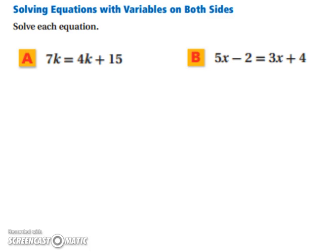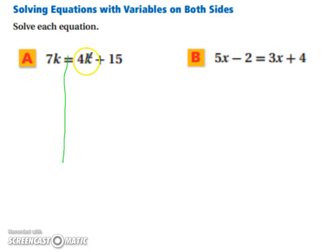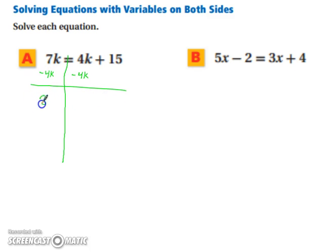You may want to get the variables to one side of the equation, so that way you're only trying to solve for one variable. We're going to start with our line so that way we know which side is our left and our right, and we want to move our variable to the other side. However, this 4 is firmly attached, so the 4 is going with it. Therefore, we're going to subtract 4k from both sides of the equation, leaving us with 3k equaling 15.